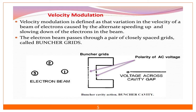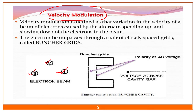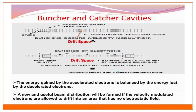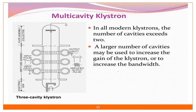Velocity modulation is the concept in which there are three kinds of electrons. One electron is having the highest velocity, one is having a normal velocity, and the third is the slowest electron. We are passing these through a buncher grid. We are decelerating the electron with higher velocity. We are not doing anything with the electron of moderate velocity. And we are accelerating the electron which has the slowest velocity. At one point we are bunching all three electrons together.